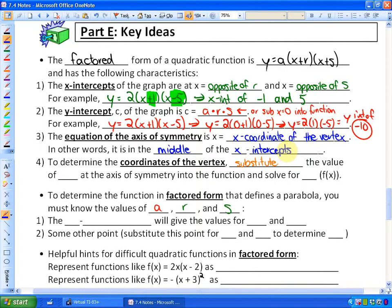Number four, to determine the coordinates of the vertex, substitute the value of x at the axis of symmetry. Since the vertex always falls on the axis of symmetry, substitute that x value into the function and solve for y to get the coordinates.